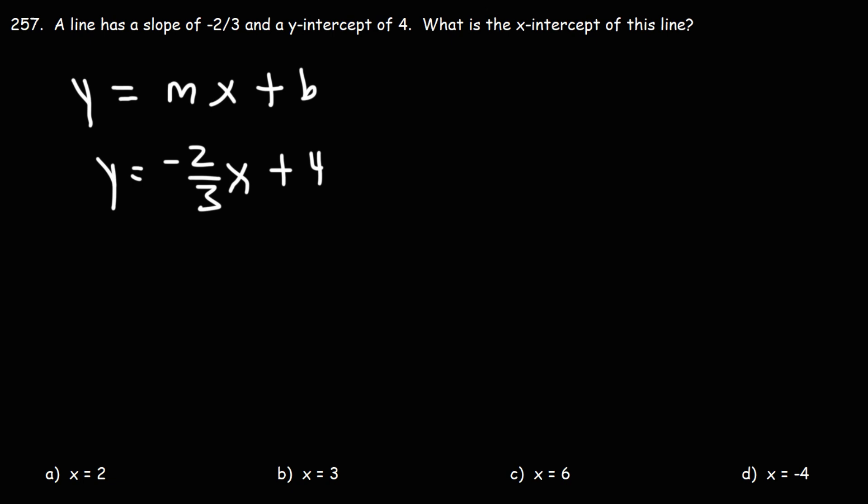Now to find the x-intercept, we need to set y equal to 0 and solve for x. So let's subtract both sides by 4 to get x by itself. These will cancel, we could bring that down.